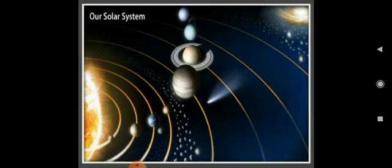Here you can see the image of our solar system. The solar system is made up of the sun and all objects that spin around it. The word 'solar' means 'of the sun'. The planets and other bodies in the solar system are placed in three distinct classes: planets, dwarf planets, and small solar system bodies.